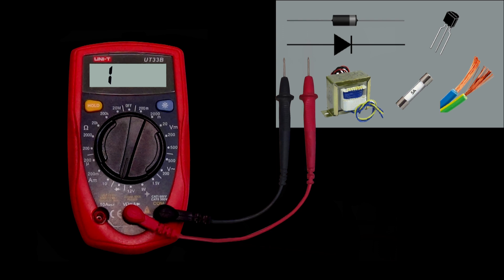Most parts are determined by the diode selection dial, including diode, transistor, transformer, fuse wire, and other electronic parts.